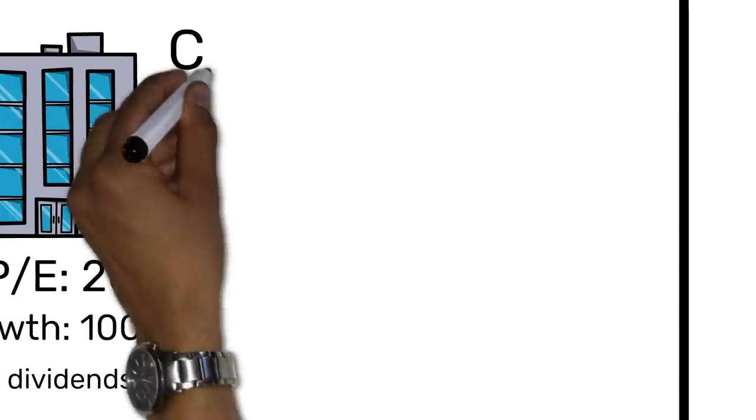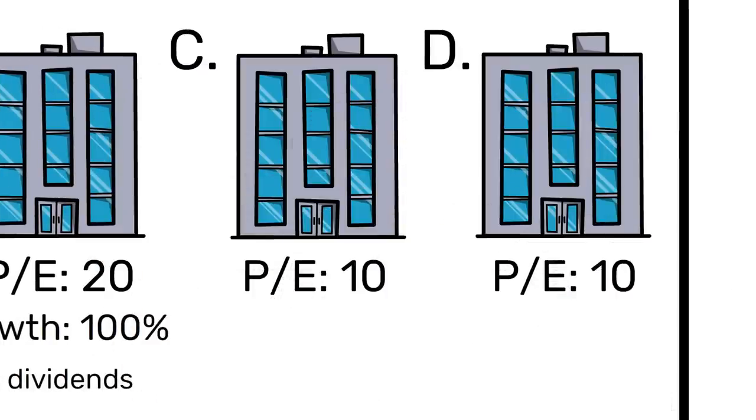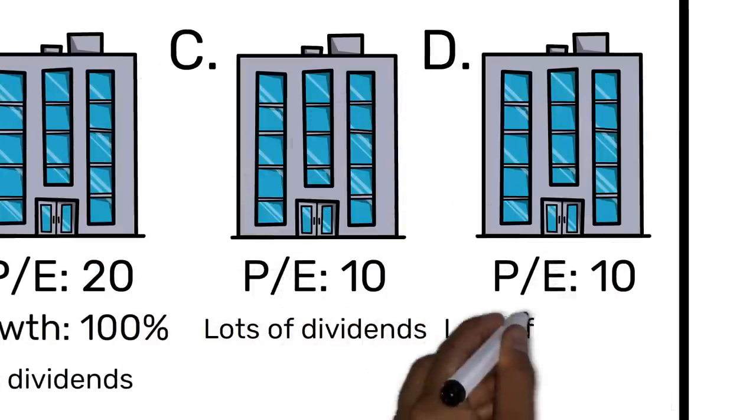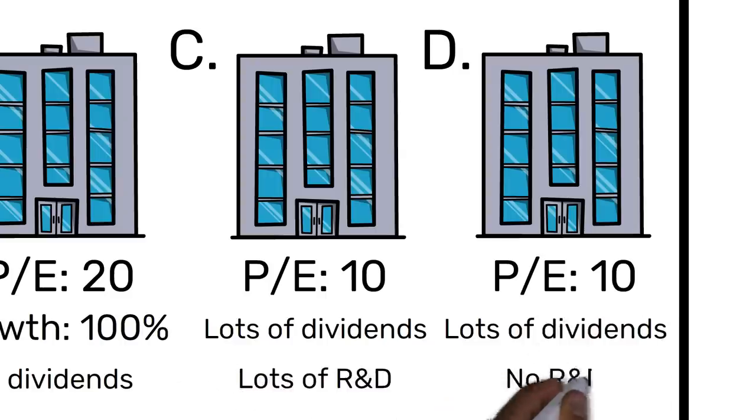Another example, company C and D are both selling at PE10. Both can distribute all their earnings in dividends. Company C is spending quite a lot of money on R&D each year, while company D isn't. Which one is more valuable? Everything else equal, it will be company C, because at any point in the future, it can cut its R&D to make higher earnings. Or it might strike gold with that research and get higher earnings from that.